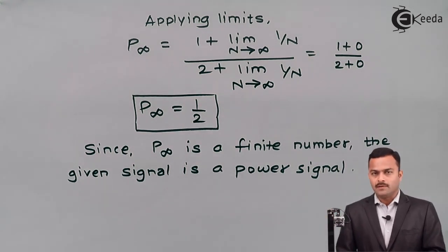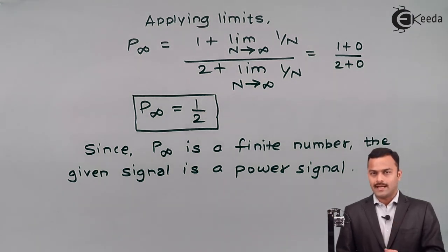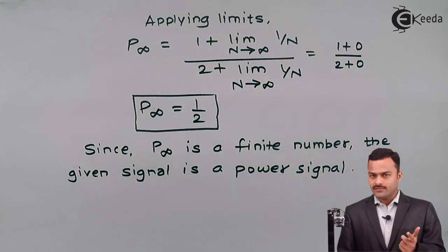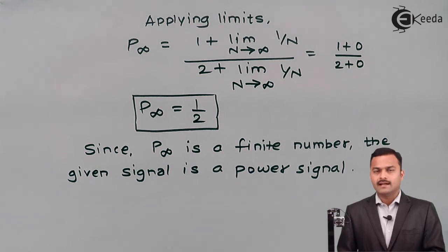This is the end of the problem where we have determined whether the signal is an energy or a power signal. First, by calculating energy — if it is infinite, we then calculate power. Here the power is finite, hence the signal u of n is a power signal. Thank you.